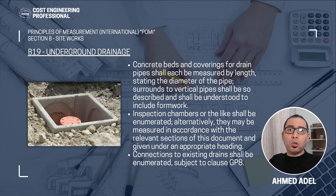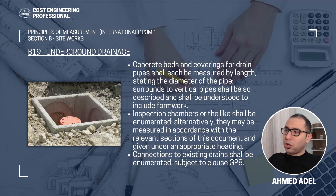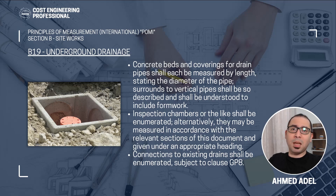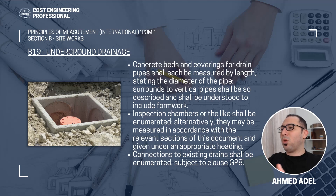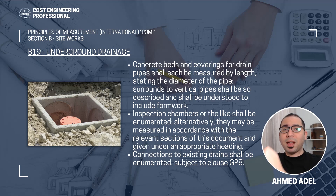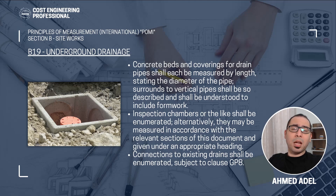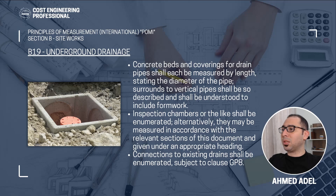If you have any vertical pipes, surrounds to vertical pipes shall be described and understood to include formwork, because to make a concrete surround for a vertical pipe you need formwork to cast the concrete. Inspection chambers, manholes, and similar items shall be enumerated, or you can measure them in accordance with relevant sections of PMI — measuring the concrete, blockwork, waterproofing, plastering, paint, and excavation separately under correct headings. Alternatively, simply count them in numbers under siteworks. Connections to existing drains shall be enumerated and dealt with in accordance with general principles subsection 8.